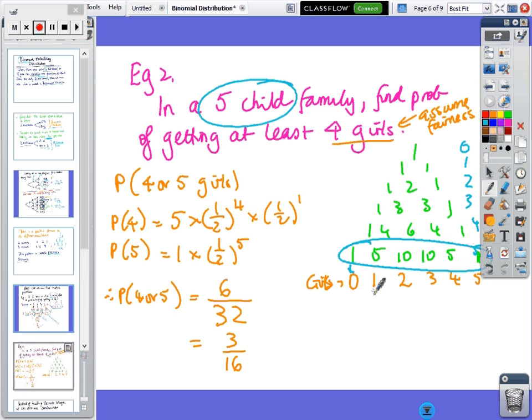So no girls, one girl, two girls, three girls, four girls, five girls. We want at least four girls, which means four or five. For four girls, there are five ways that could happen. Each girl has probability 1/2 and you need four of them. Each boy has probability 1/2 and you need one of them. So P(4 girls) = 5 × (1/2)⁴ × (1/2)¹.